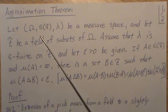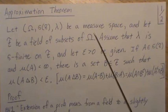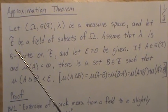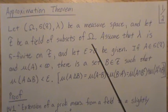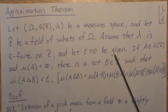So here it is. Let (Ω, σ(F), λ) be a measure space, and let F be a field of subsets of Ω. So this is the sigma field generated from this field F.